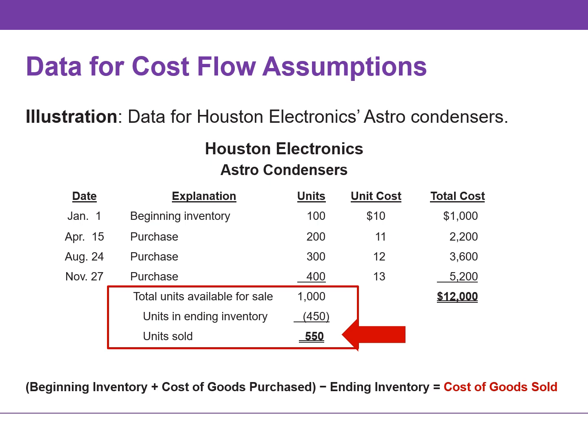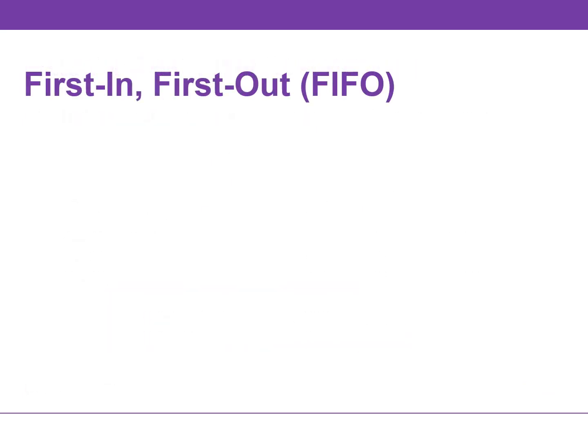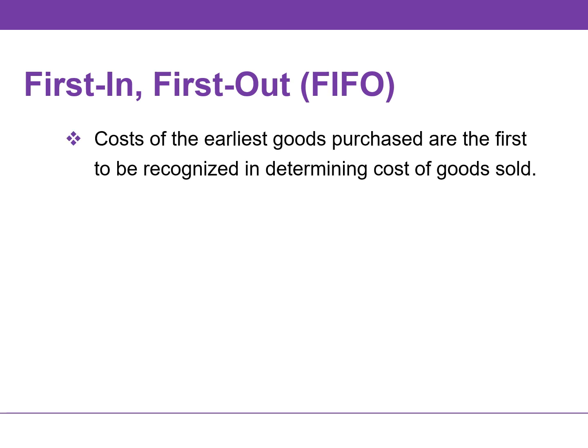The value assigned to the ending inventory will depend upon which cost flow method we use. The first-in, first-out — FIFO — method assumes that the earliest goods purchased are the first to be sold. So under this method, the cost of the earliest goods purchased are the first to be recognized in determining cost of goods sold.